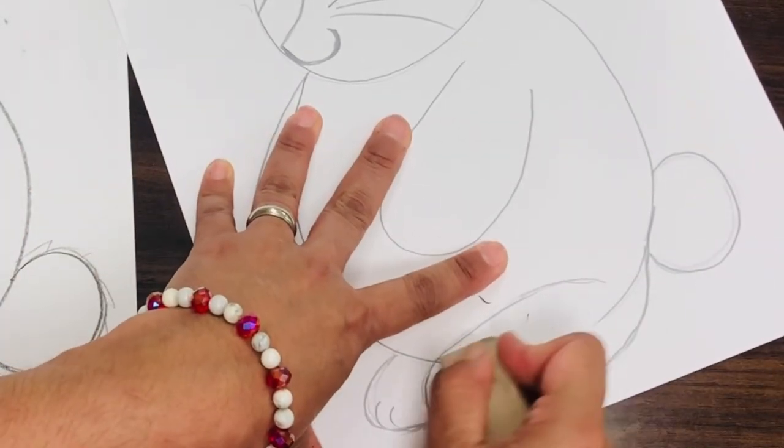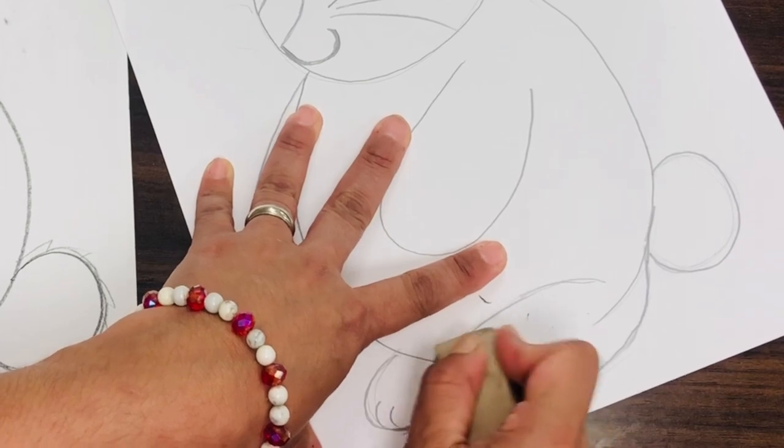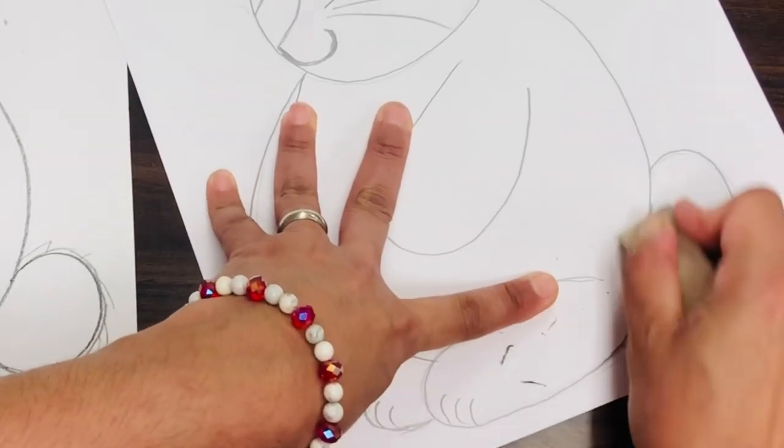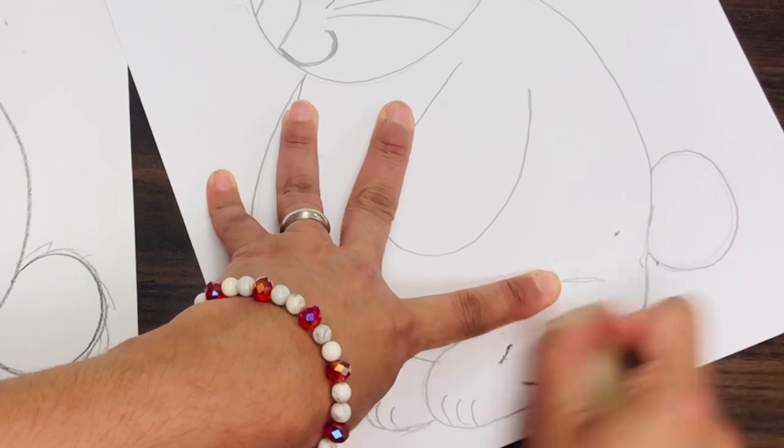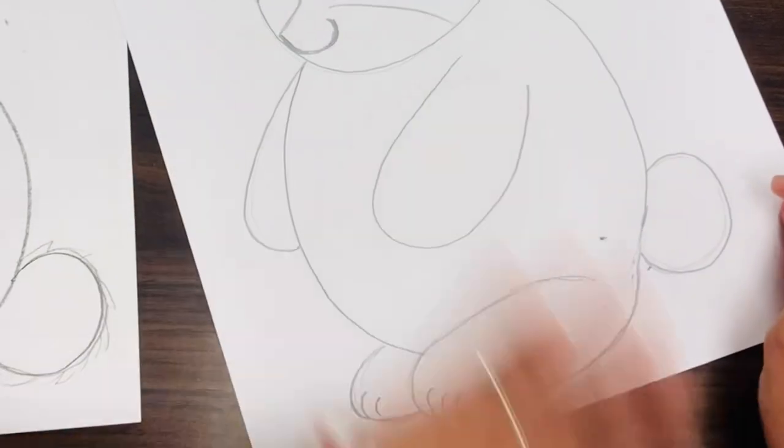Now get an eraser, erase this line so that when you trace, you don't trace lines that you don't want to show up in the end.